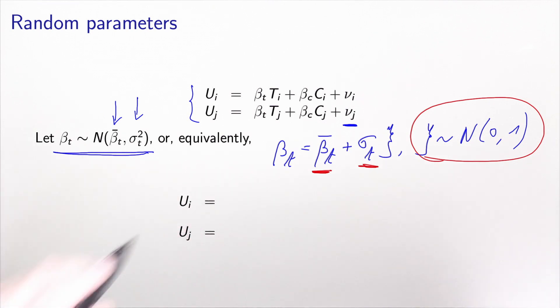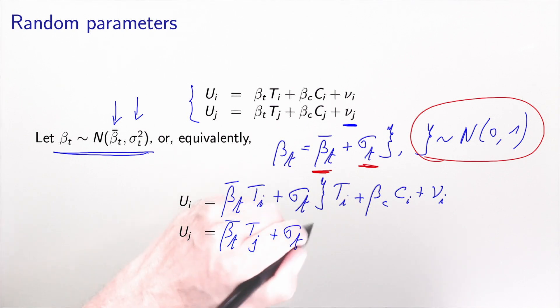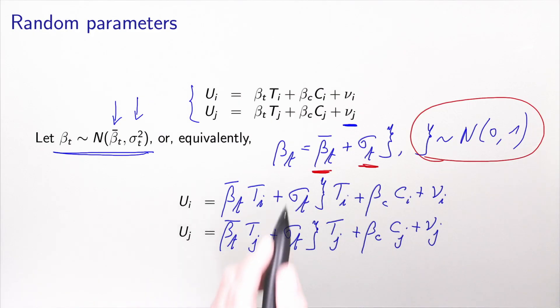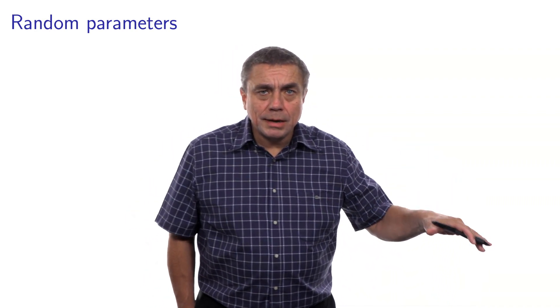Let's now plug this value in the specification above. So what we obtain is that u_i is equal to beta_t bar times t_i, plus sigma_t xi t_i, plus beta_c c_i, plus nu_i. If you compare this specification with the one that we have seen so far, the term that involves the random parameters includes now a variable. While in the previous models that we have seen so far, this was a pure error component that did not involve any variable. But that's the only difference. So everything else applies.